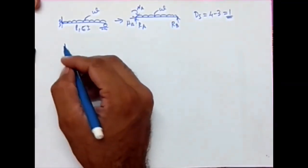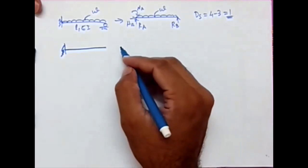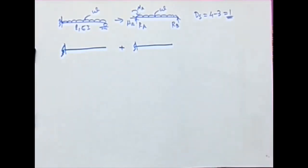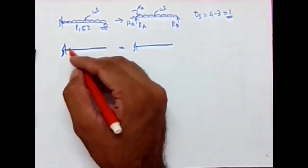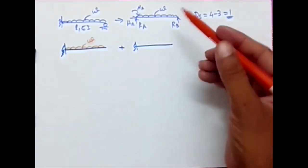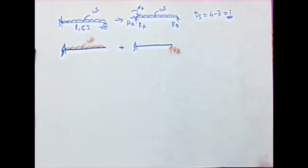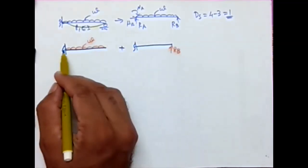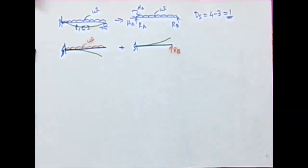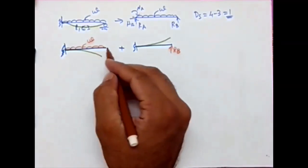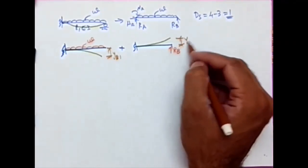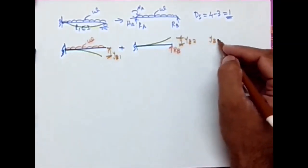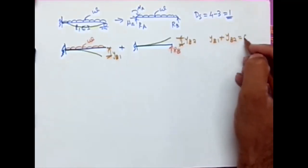In the second step, I am deciding on the primary structure — a cantilever. I am plotting Ds plus 1, that is 2 cantilevers. In the first one I load the external load, and in the second one I load the redundant Rb. Then I plot the deflected shapes of the original structure and the substructures, getting displacements Yb1 and Yb2. Since the original structure deflection at B is zero, the compatibility equation is Yb1 plus Yb2 equal to 0.